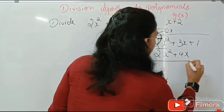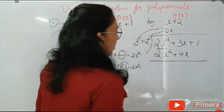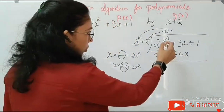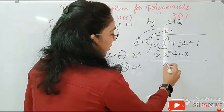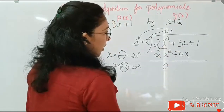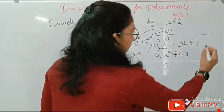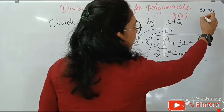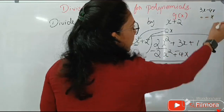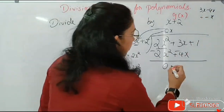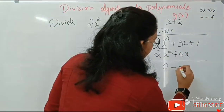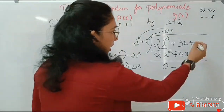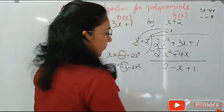By normal division we subtract these terms. 2X squared minus 2X squared is 0, and 3X minus 4X is minus X. So we have minus X and here it is plus 1.